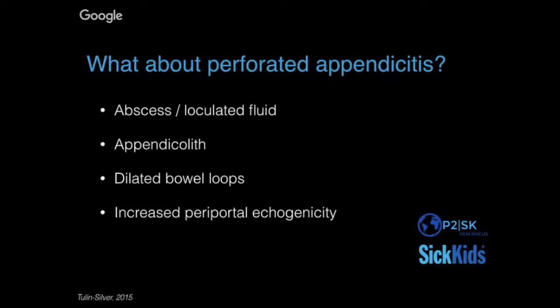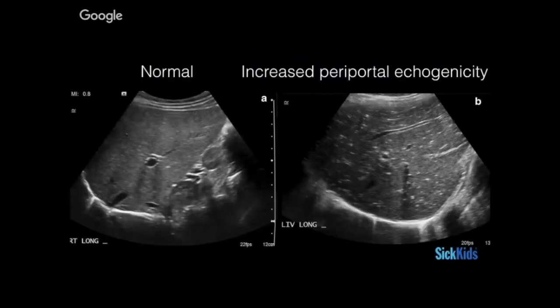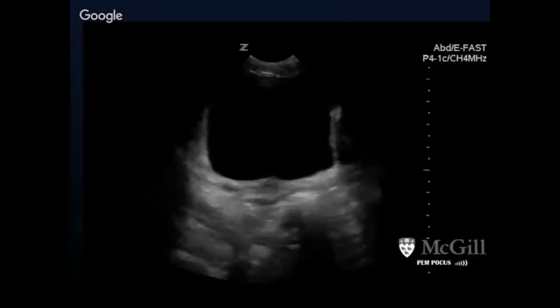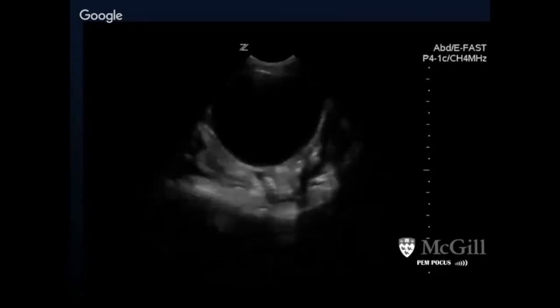Chulin Silver in 2015 confirmed those findings and concluded that a constellation of dilated bowel loops, right lower quadrant echogenic fat, and complex fluid gives specificity up to 99% for perforated appendicitis. They also highlight increased periportal echogenicity as suggesting inflammation — bright hyperechogenic areas on the right side of the screen can indicate inflammation.